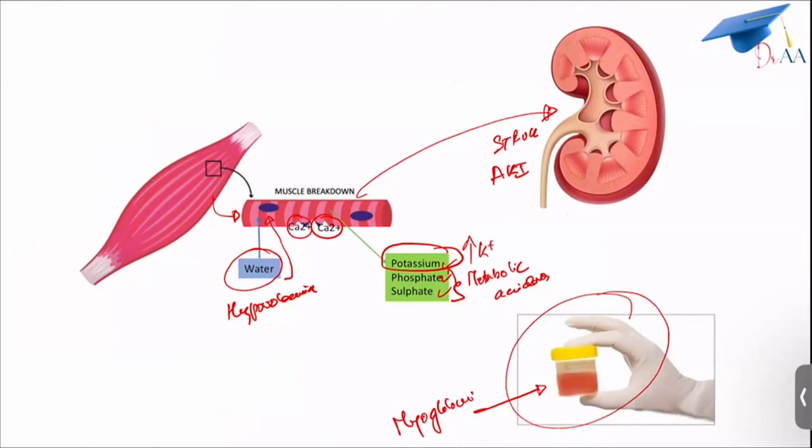To summarize, muscle fibers break down. Calcium gets deposited in broken muscle fibers, resulting in low calcium levels. Intracellular contents come out - potassium causes hyperkalemia, while phosphate and sulfate cause metabolic acidosis. Water gets sequestered into the broken muscle.